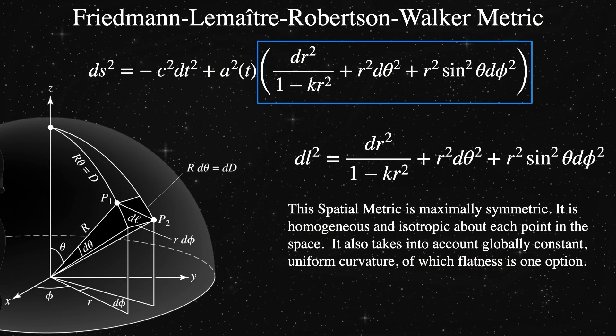First, we note that the signature stays with the pseudo-Riemannian signature minus plus plus plus, as can be quickly seen.